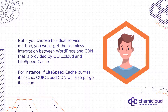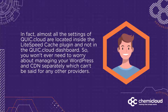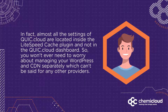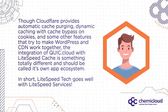For instance, if Lightspeed Cache purges its cache, QuickCloud CDN will also purge its cache. In fact, almost all of the settings of QuickCloud are located inside the Lightspeed Cache plugin and not in the QuickCloud dashboard. So you won't ever need to worry about managing your WordPress site and your CDN separately — and that can't be said for any other provider. Although Cloudflare does provide automatic cache purging, dynamic caching with cache bypass on cookies, and some other features that try to make WordPress and CDN work together, the integration of QuickCloud with the Lightspeed Cache is something totally different and it's really its own app ecosystem.